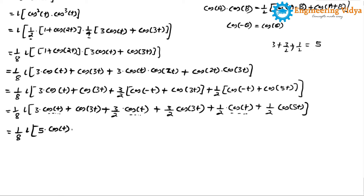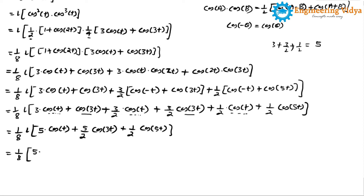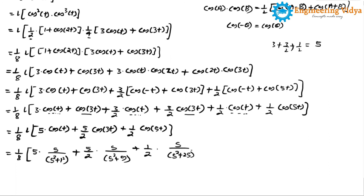Now we apply the linearity property of the Laplace transform. Using L{cos(at)} = s/(s² + a²), we get: 1/8 times [5 · s/(s² + 1) + (5/2) · s/(s² + 9) + (1/2) · s/(s² + 25)].